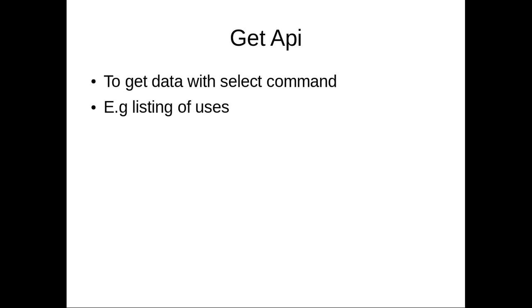There are mostly three to four types of APIs that you will use: GET, POST, PUT, and DELETE. The GET API is always used to get data — it should only use a SELECT command. You should never use GET to insert or update data. For example, GET is used to get a list of products or a list of users.